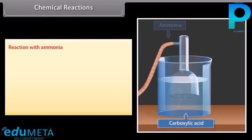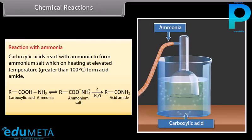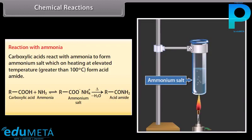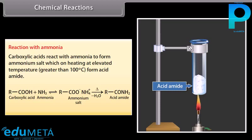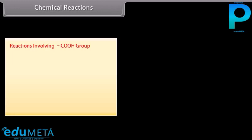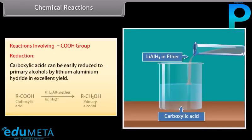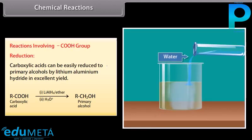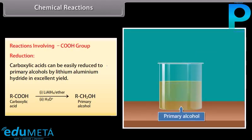Reaction with ammonia: carboxylic acids react with ammonia to form ammonium salt; on heating at elevated temperature (greater than 100°C), amides are formed. Reduction: carboxylic acids can be easily reduced to primary alcohols by lithium aluminium hydride in excellent yield.